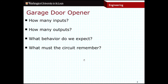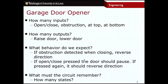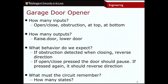Ultimately what we end up with is this: here are our four inputs — my button, an open/close button, my obstruction sensor, and two sensors that tell us whether the door is at the very top or at the very bottom. In terms of outputs, I've got two: one that tells the door to go up, and another that tells the door to go down.